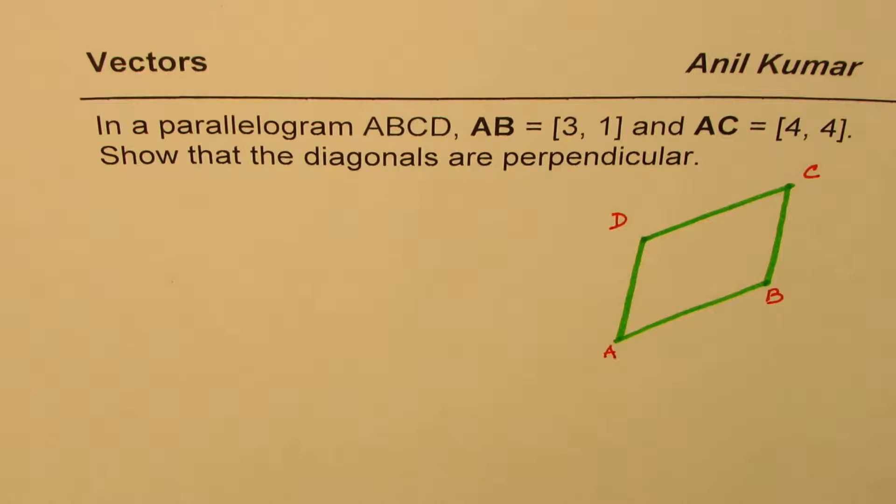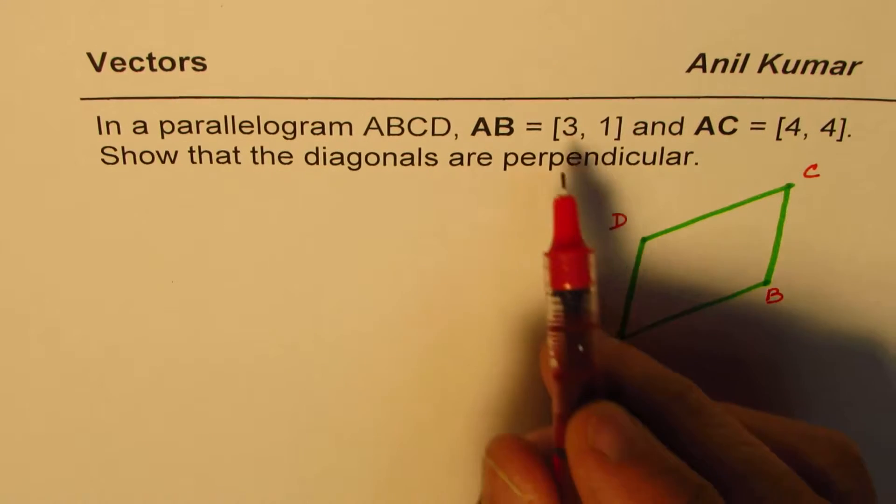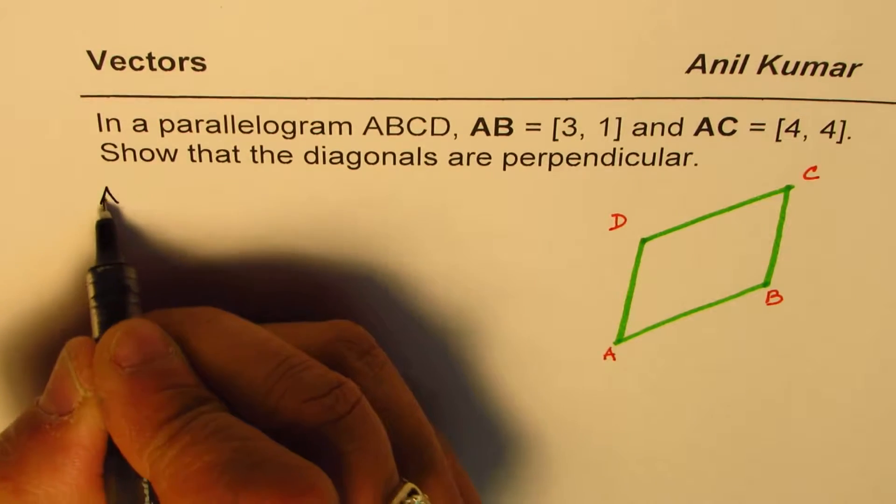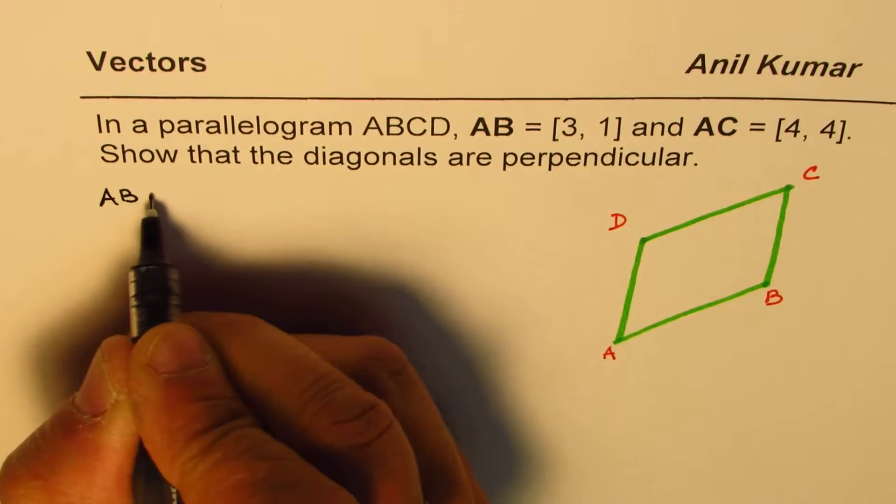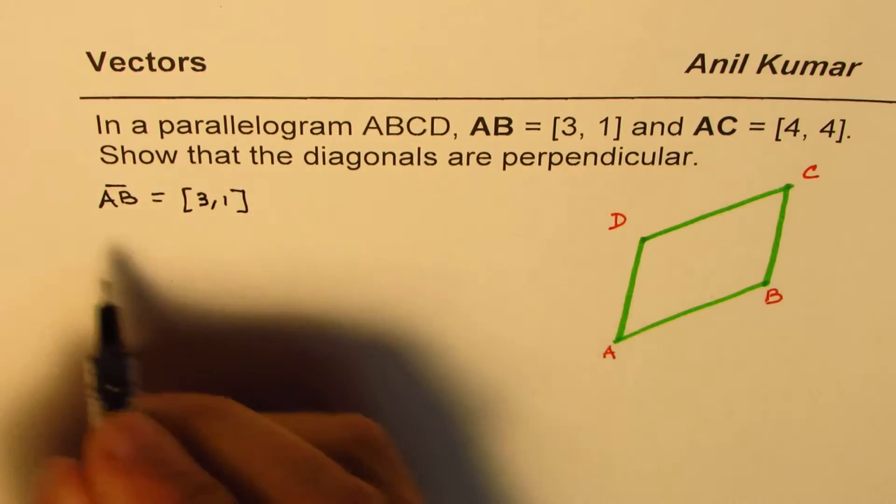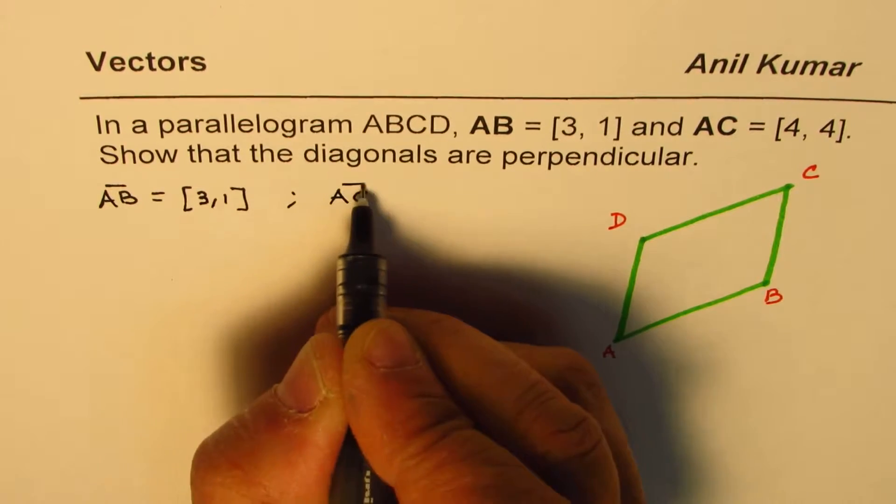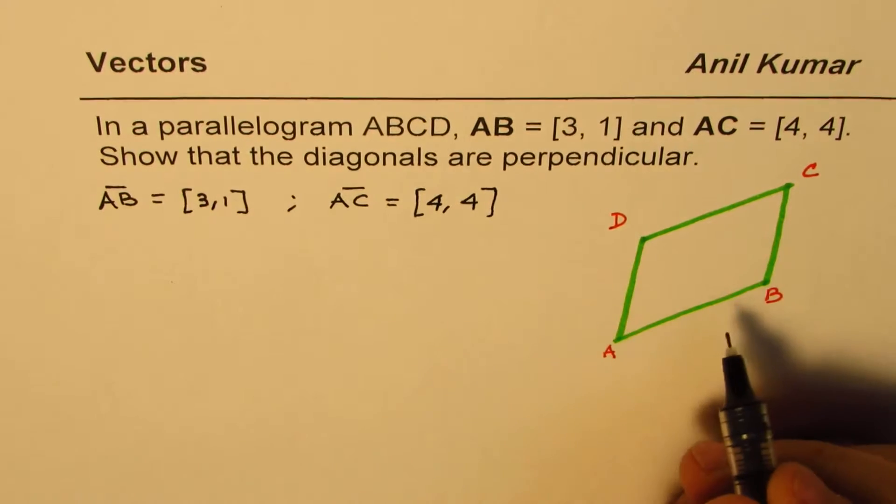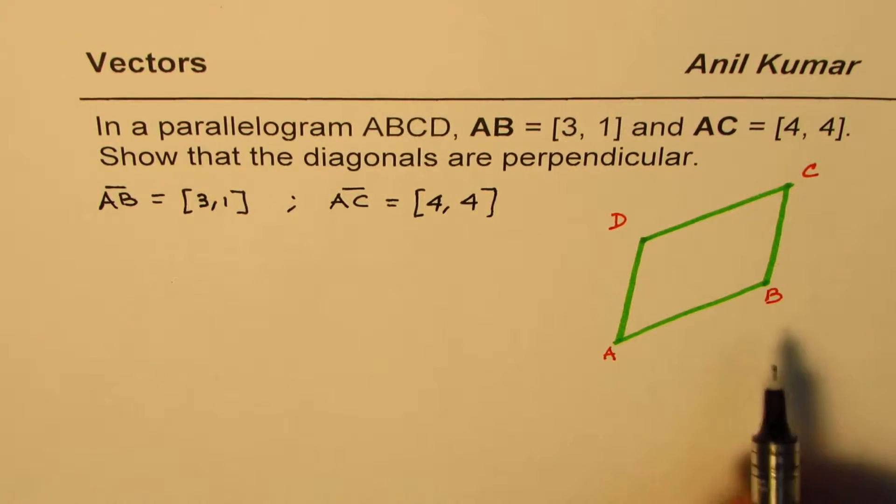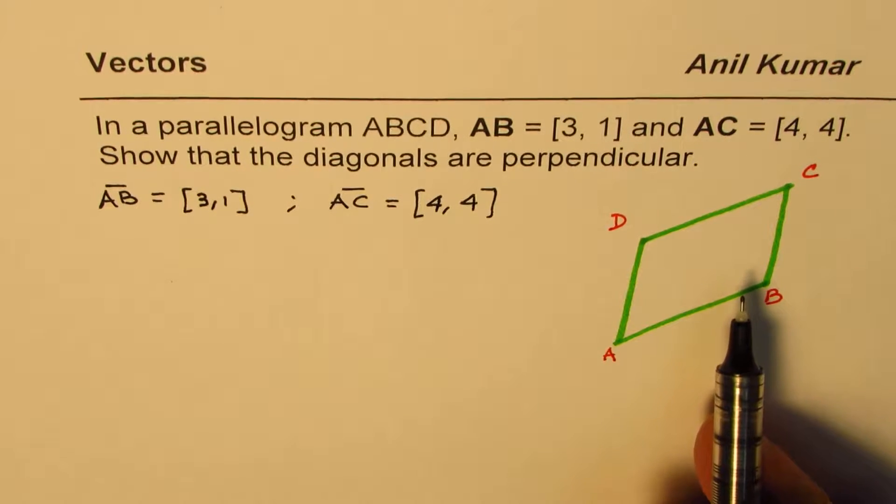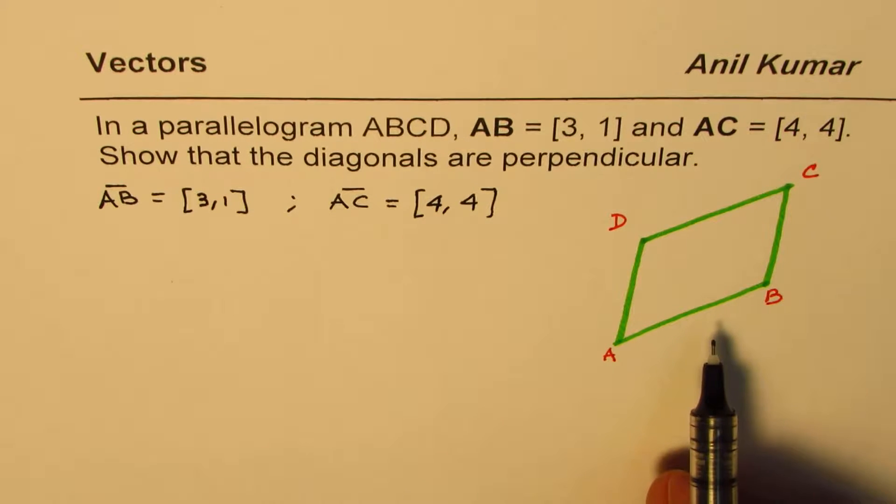So what we have here is that we are given AB as [3,1]. We are given the vector AB is [3,1], and vector AC is [4,4]. This question becomes easier if you really put it on scale. Then you can easily see other vectors. Purposely, I have not done so since we want to understand a method of solving such questions.